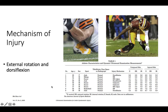First we want to understand the mechanism. A high ankle sprain is an injury to the distal tibiofibular joint. We see here a football player landing on the tibia with a foot planted in the ground, which will force the ankle joint — the talocrural joint — into external rotation, gapping the distal tibiofibular joint.